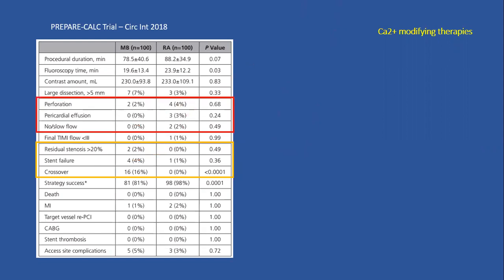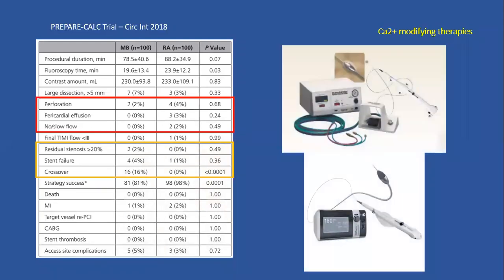Another reason rotational atherectomy got a second wind was that the complication rate was not significantly different from balloon — numerically higher from perforation to effusion to no-reflow, on average about 5 to 7%, but much lower than previously. Most importantly for me, they changed how rotational atherectomy looks. The old system was very complex; when the new, nicer system came out, we started using it.